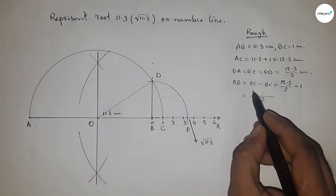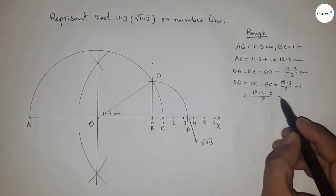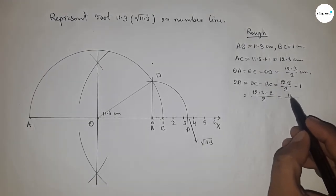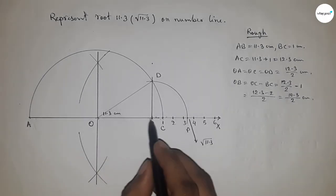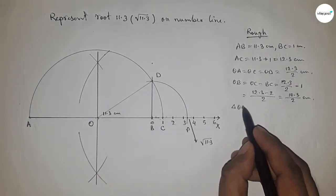And calculating this, so this is 12.3 minus 2, so 10.3 by 2 centimeter. Now from right angle triangle OBD.